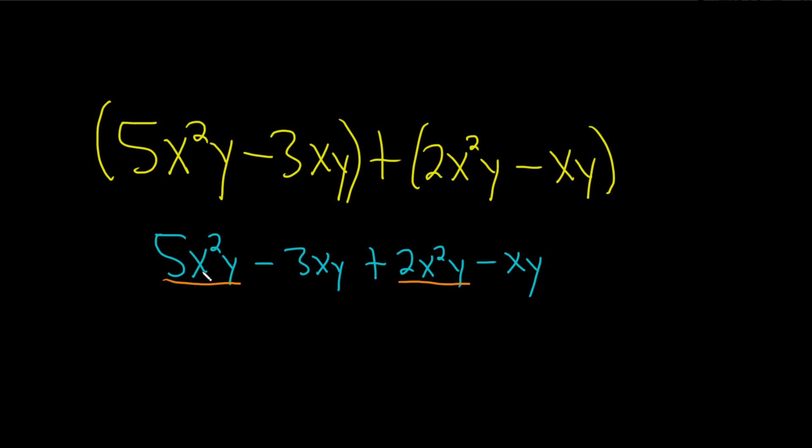We can add those together. You just add the 5 and the 2, and that gives you 7. And then you just write the x²y like that.